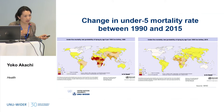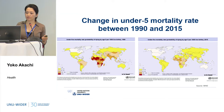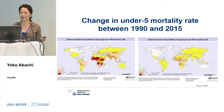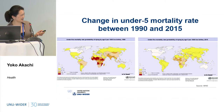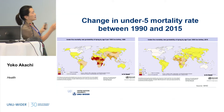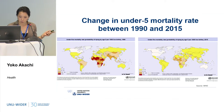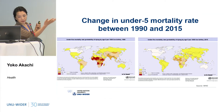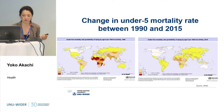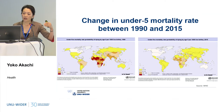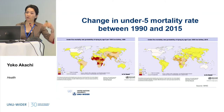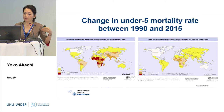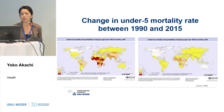Looking back at what we achieved in the last 25 years, you can see the left side is the under-five mortality rate in 1990, and to your right it's the under-five mortality rate in 2015. In sub-Saharan Africa countries, the rate was more than 200 in many countries, and we don't see that in 2015.